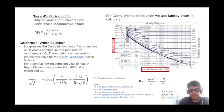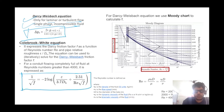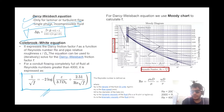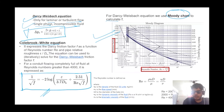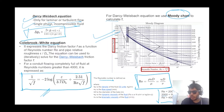The Darcy-Weisbach equation is again applicable for laminar and turbulent single-phase incompressible fluid. To find the friction factor, the Colebrook-White equation can be used, or alternatively the Moody chart. For the Moody chart, we need the Reynolds number: Re = ρuD/μ. If Re < 2000 it is laminar; 2000–4000 is transition; above 4000 is turbulent.